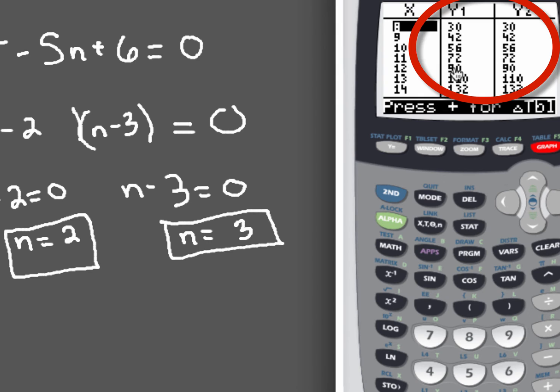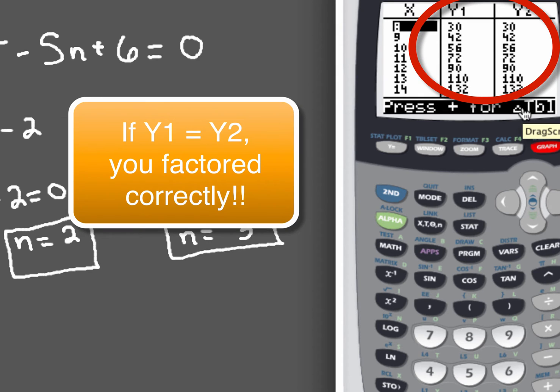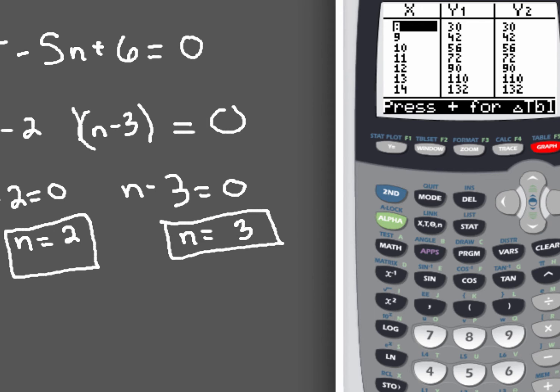Now what you're going to analyze here is the y1 and the y2 columns. Those things are identical and that's what you want. You want to make sure that those two columns are exactly the same because then that tells you that you factored your equation correctly.